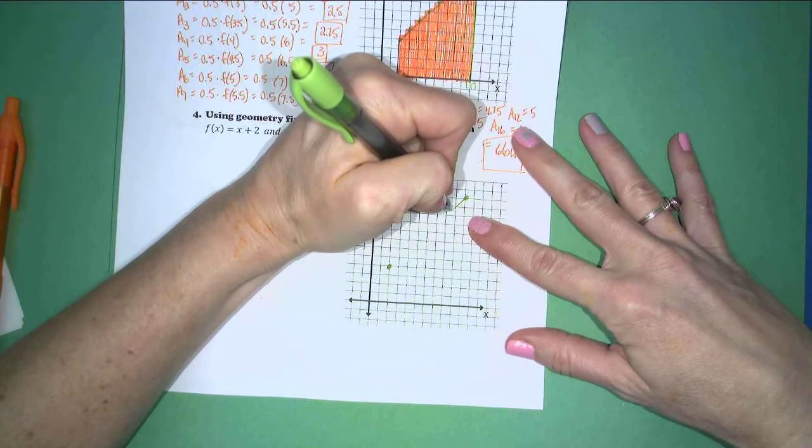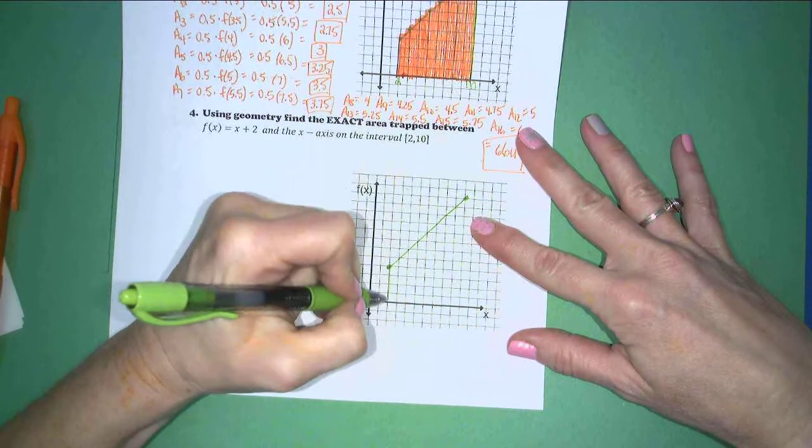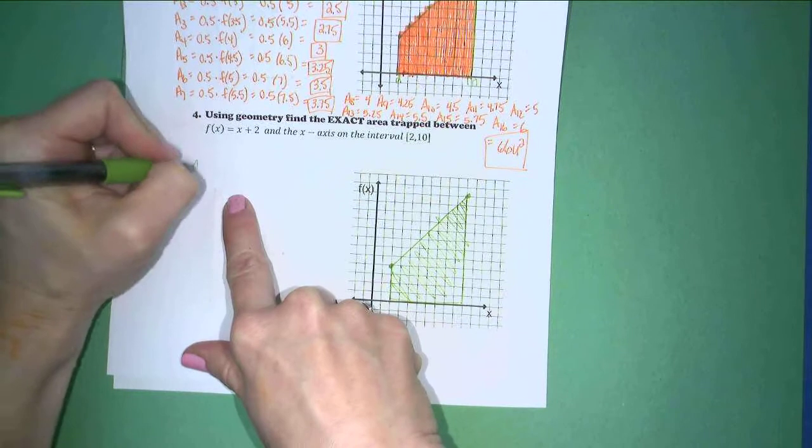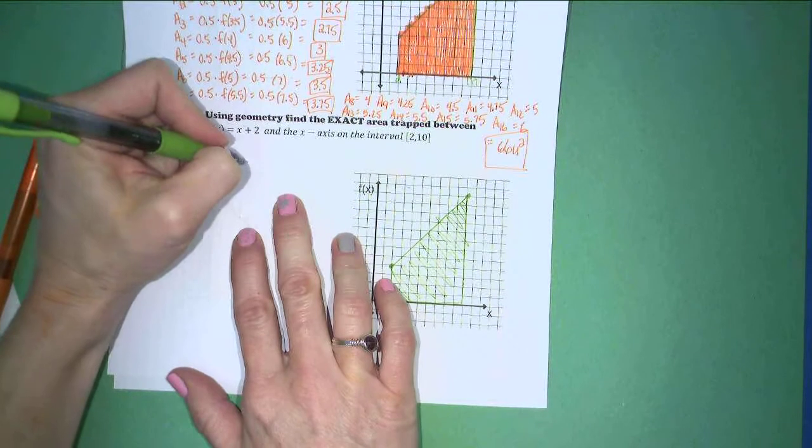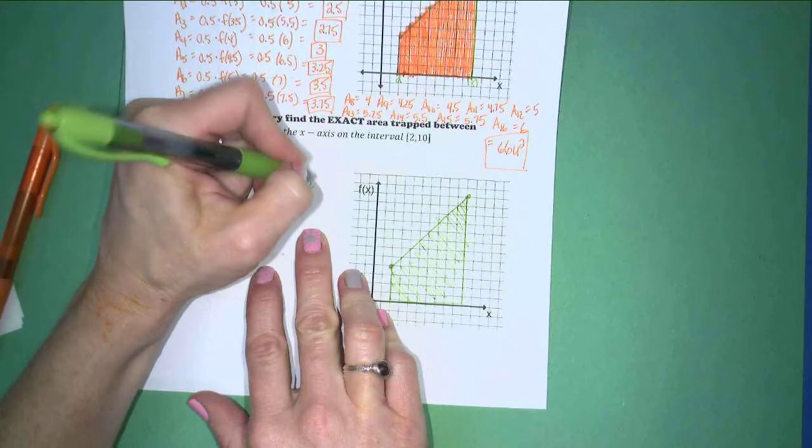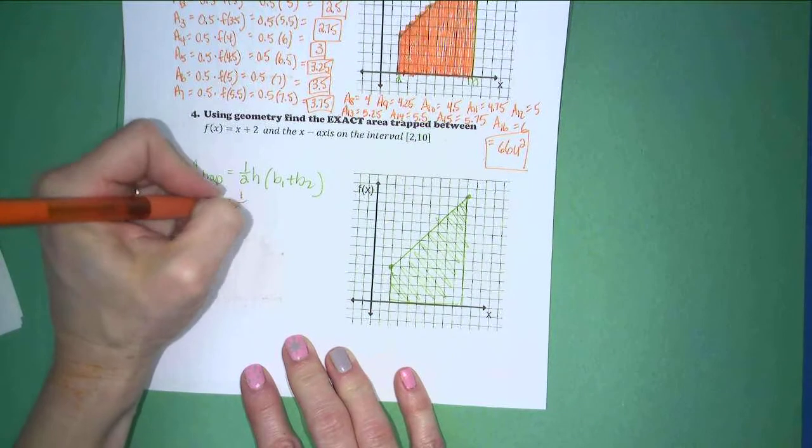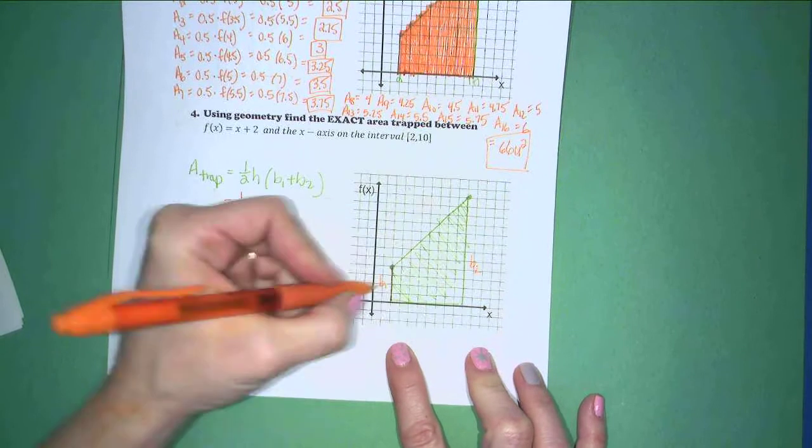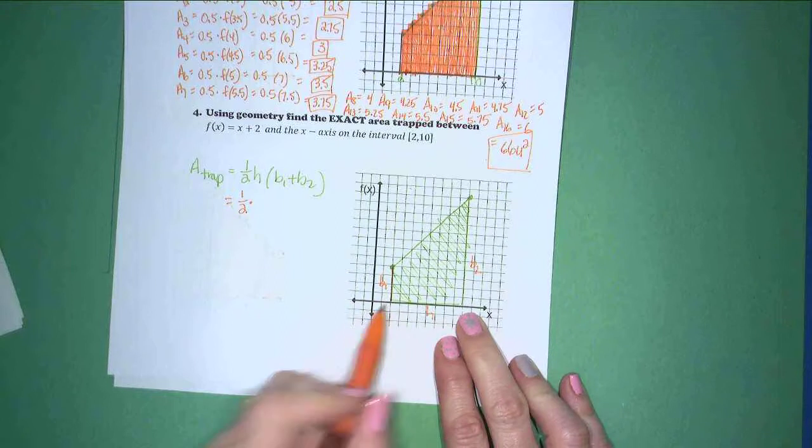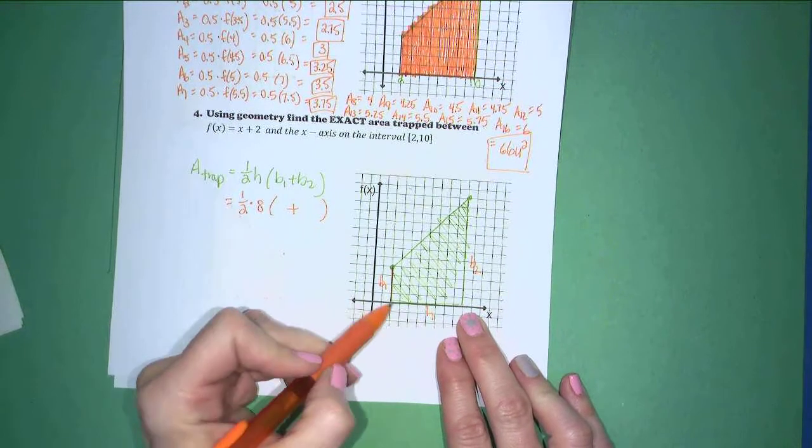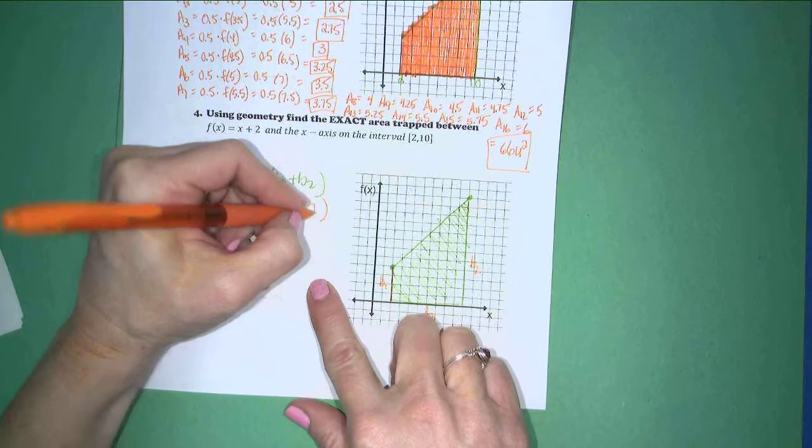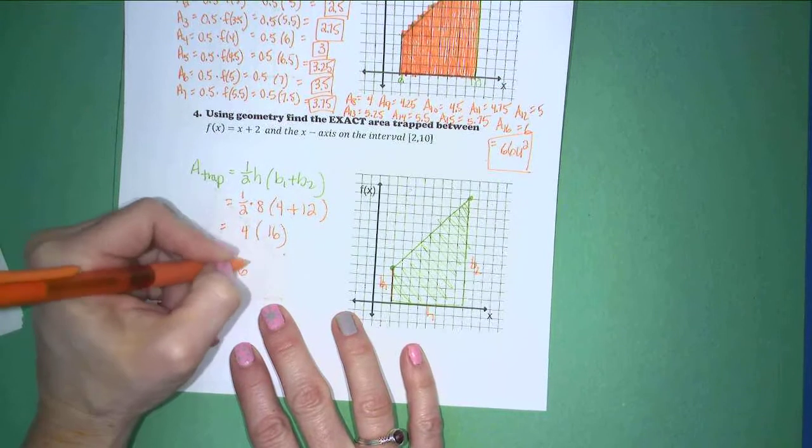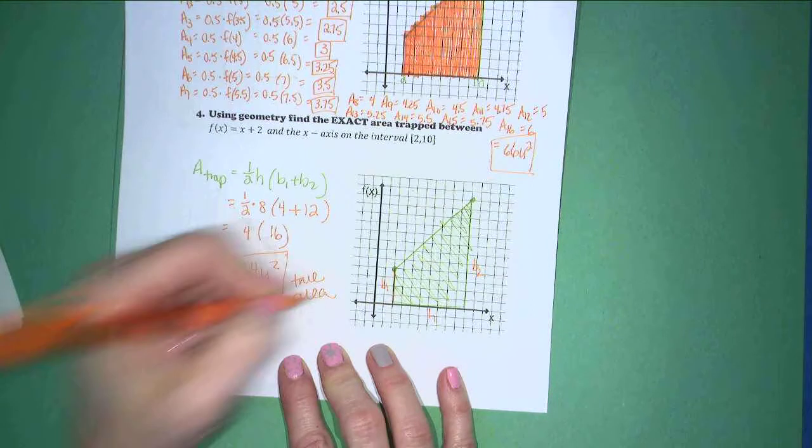So, if I draw this trapezoid coming through here, I know that area of a trapezoid, if I fill this in here, the formula for area of a trapezoid is half the height times the sum of the bases. So, if I fill in what I know here, I know that my height is the distance between the two bases. The bases run parallel. So, I'll call this base 1 and this base 2. My height is going to run the distance between them. So, my height is 8, and my base lengths are 4 and 12. So, half of 8 is 4 and 4 plus 12 is 16. So, 64 units squared is the exact or true area trapped between the function and the x-axis.